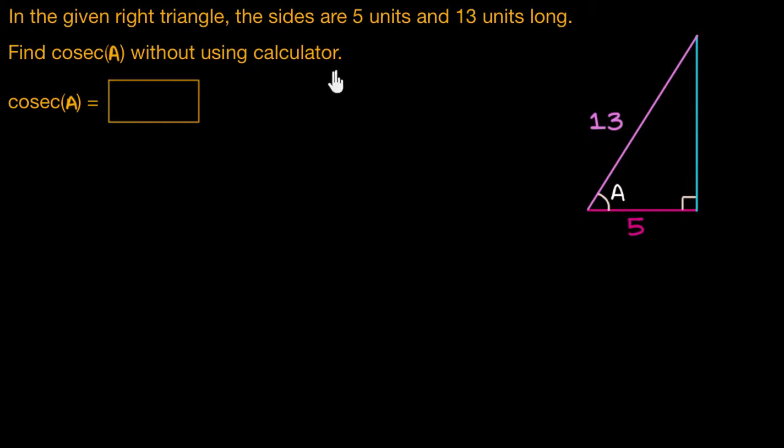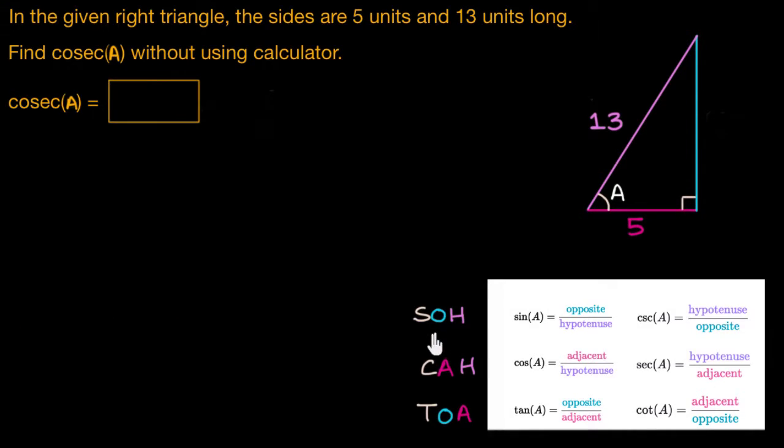So the first question that pops up is what is cosec A? Cosec A is the reciprocal of sine of A. And what is sine of A? We can recall it from the mnemonic SOH CAH TOA. Sine of an angle is the ratio between the opposite side to the angle and the hypotenuse. And the reciprocal of it is cosec A, which is the ratio between the hypotenuse and the side opposite to the angle.